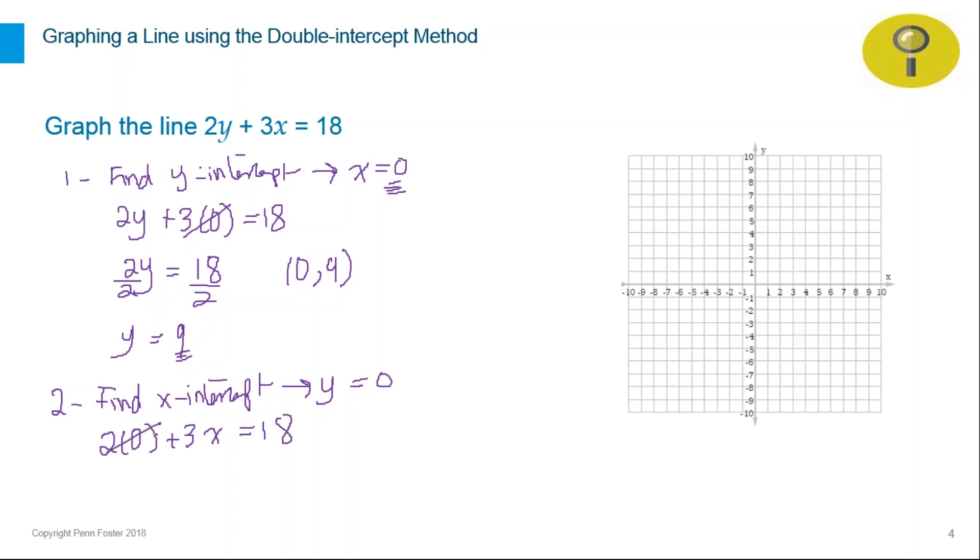Two times zero is gone, so 3x = 18. Solve for x by dividing both sides by 3. That gives us x = 6. The second point is (6, 0).